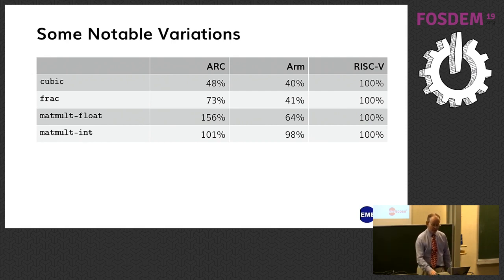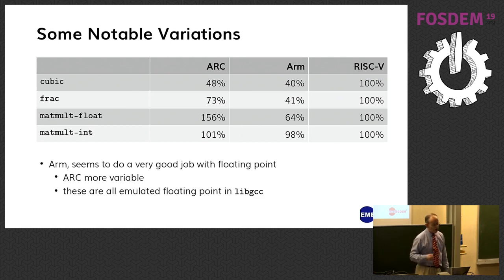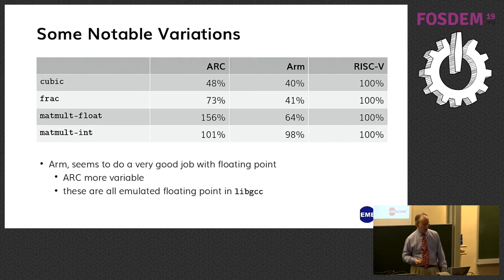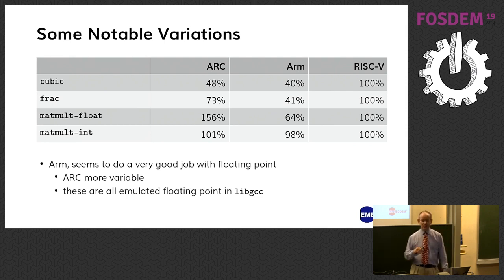That gives a clue that ARM seems to do a very good job with floating point. ARC is a bit more variable. Remember, these are all chips without a hardware floating point unit, so this is about floating point emulation done in libGCC, because we're using the GCC compiler.